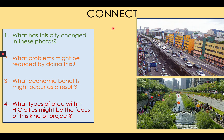Question one: what has this city changed in these photos? In the top photo there's a long highway filled with cars, and in the bottom photo there's a river, trees, and people walking. Question two: what problems might be reduced by doing this? Air pollution might be reduced since there are fewer vehicles releasing gases. Congestion might be reduced and people can get around more easily. There are fewer cars so it's easier to park. People's quality of life and health has improved because they walk more, and perhaps they even talk to each other more.